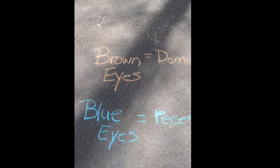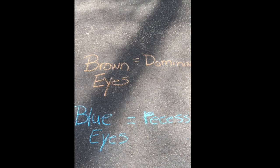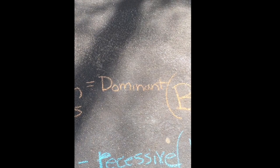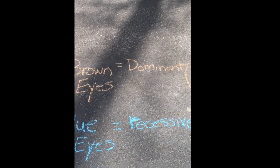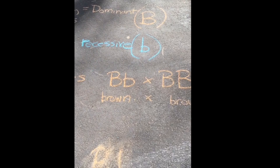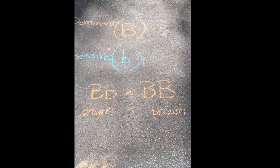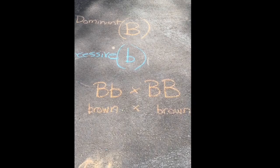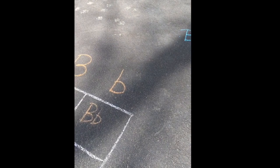I made one more video for you because I wanted to show you how to make a Punnett square using brown-eyed and blue-eyed parents. For a brown-eyed parent, brown is going to be dominant — we'll use a capital B for dominant. Blue eyes is recessive, so we'll use lowercase b. We're going to cross two parents that are capital B, lowercase b, and capital B, capital B. So one parent would be homozygous dominant and the other would be heterozygous, and they're both brown.